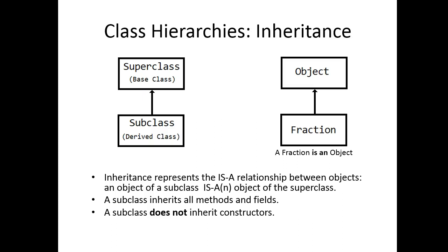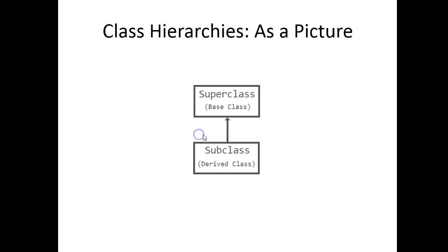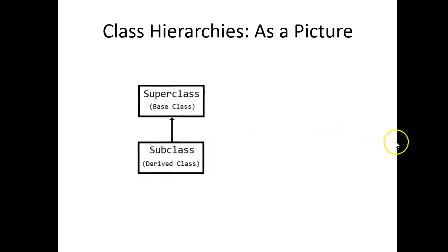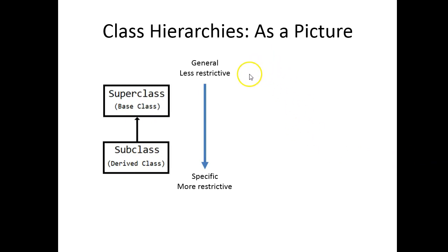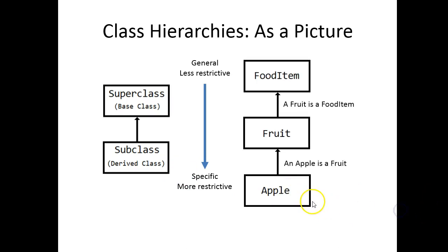This is going to come up on the AP exam, so for those of you writing the AP exam this year, remember this point. A class hierarchy is a picture, and when we think of a class hierarchy, we think of general or less restrictive to more restrictive or more specific. Here's an example: an apple is a fruit, a fruit is a food item. This hierarchy makes sense because it supports the is-a relationship. Above food item would be object — so a food item is an object — and that's how custom classes fit into the Java hierarchy.